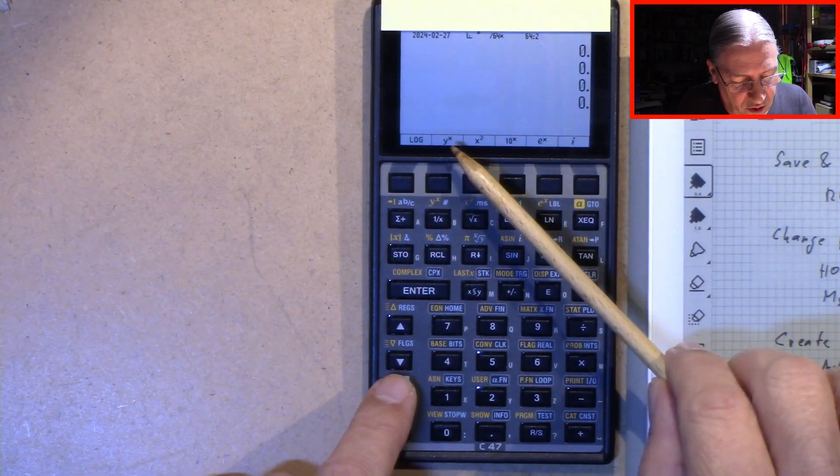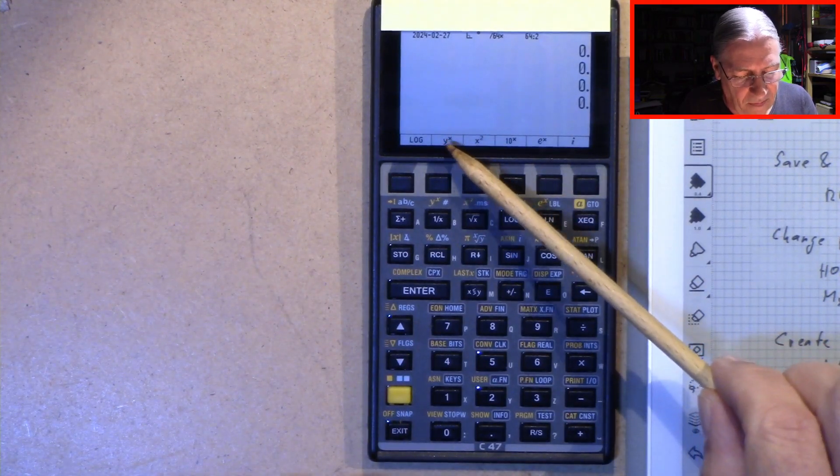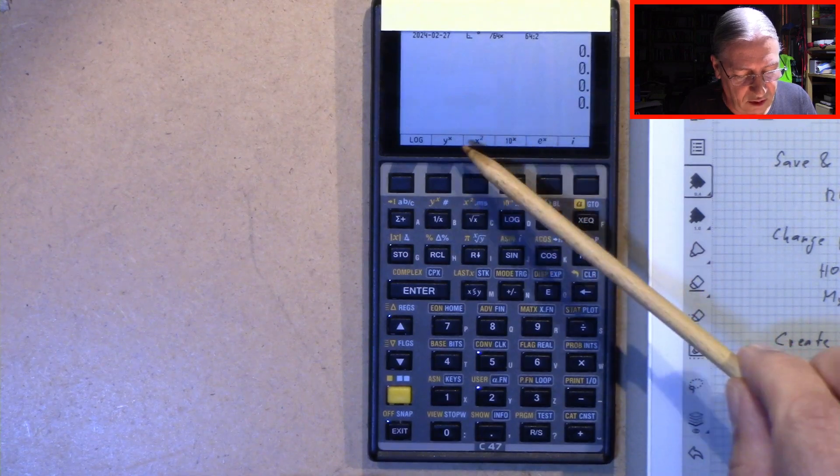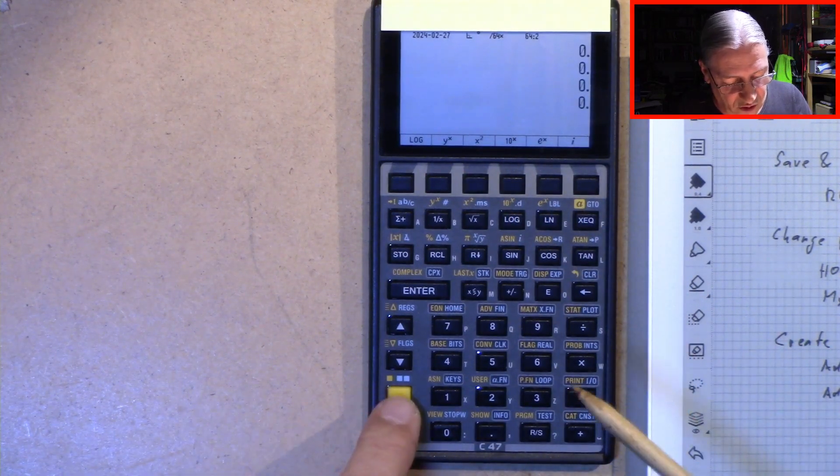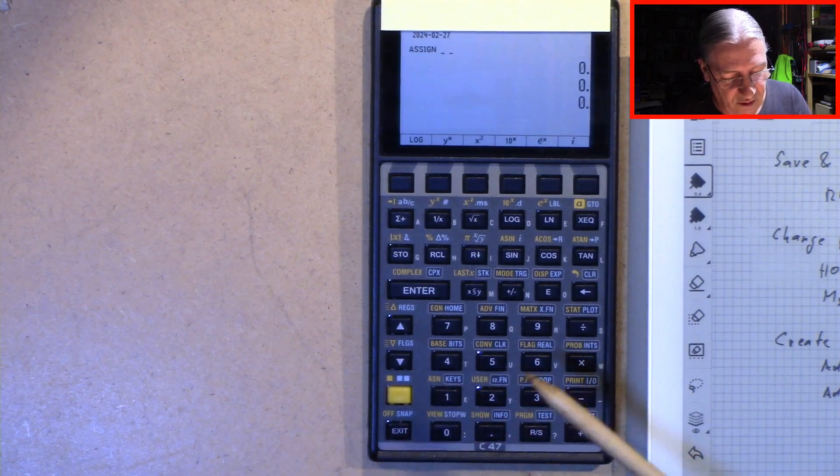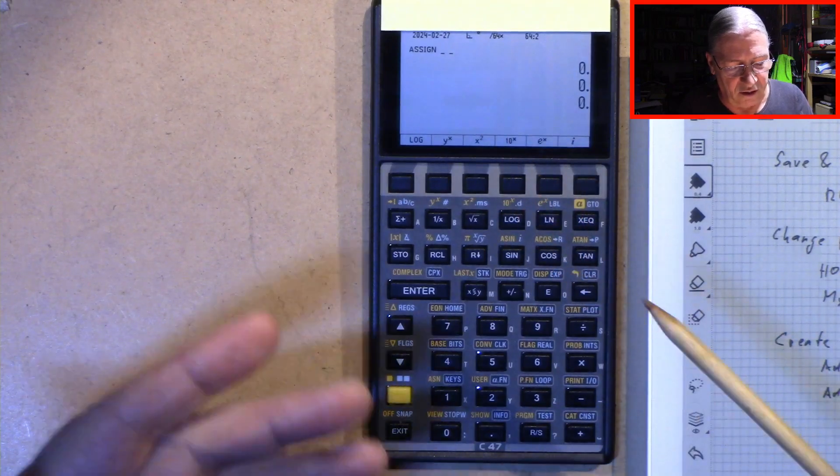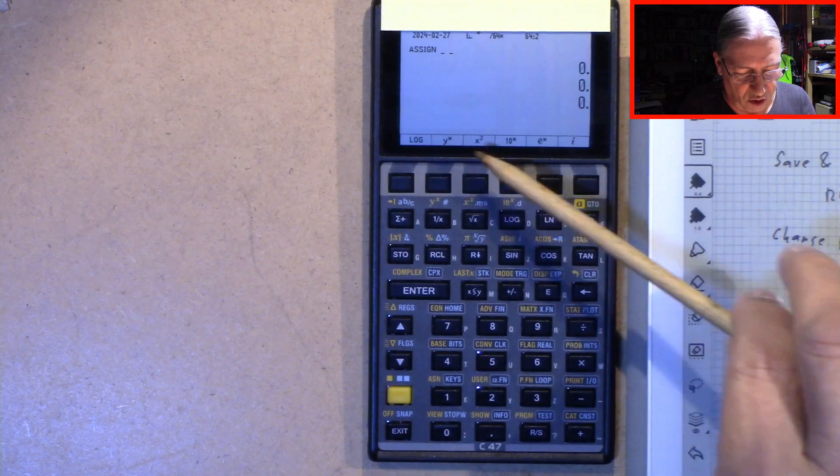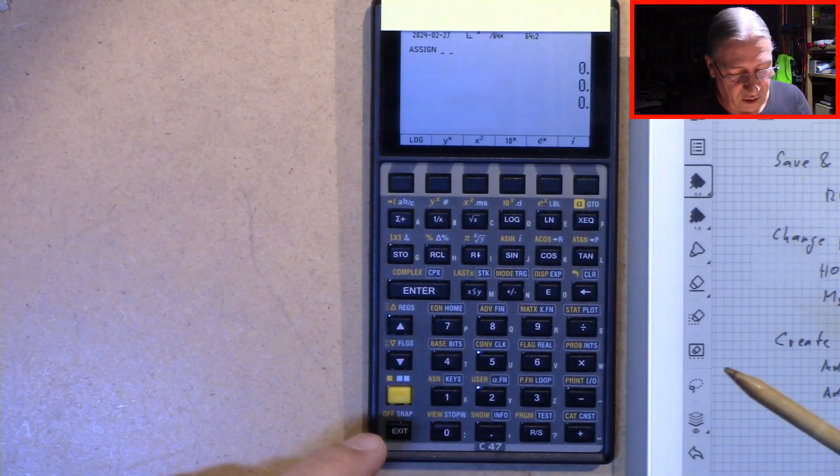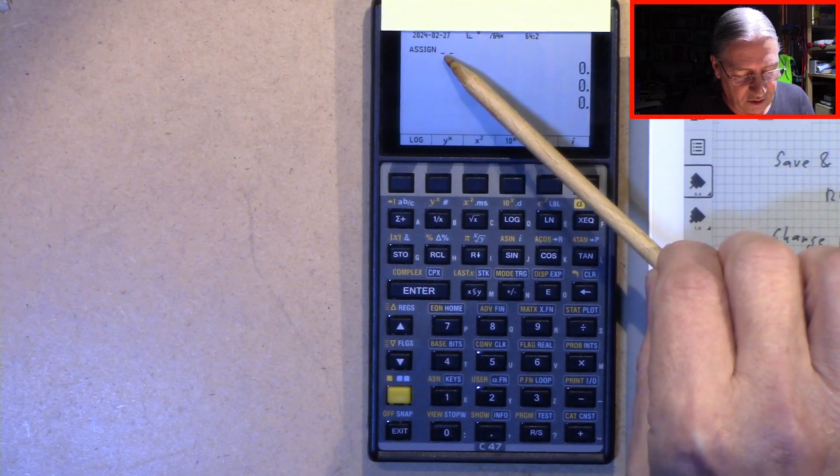And now we want, for example, to place a link to bar in this place. Then we have to do the following. We say assign again. But now we have to enter here the menu which we want to link to our my menu. In order to get this entry into this place here.